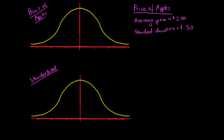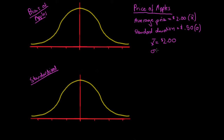What I've done is gone out to all the supermarkets I could find and collected data on the price of apples. I found that the average price of apples was $2 — I'll call this my x-bar. The standard deviation of these apple prices was 50 cents, denoted as sigma. So x-bar equals $2 and sigma equals 50 cents, and these prices were normally distributed with this mean and standard deviation.